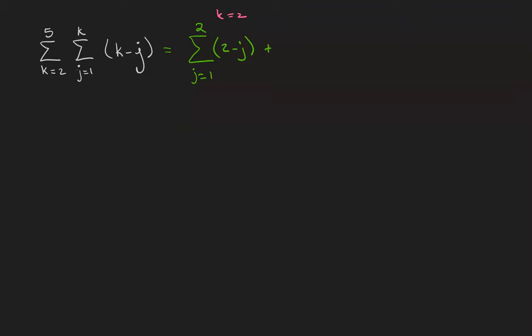Plus the sum from j equals 1 to 3 of 3 minus j, that's the k equals 3 term.